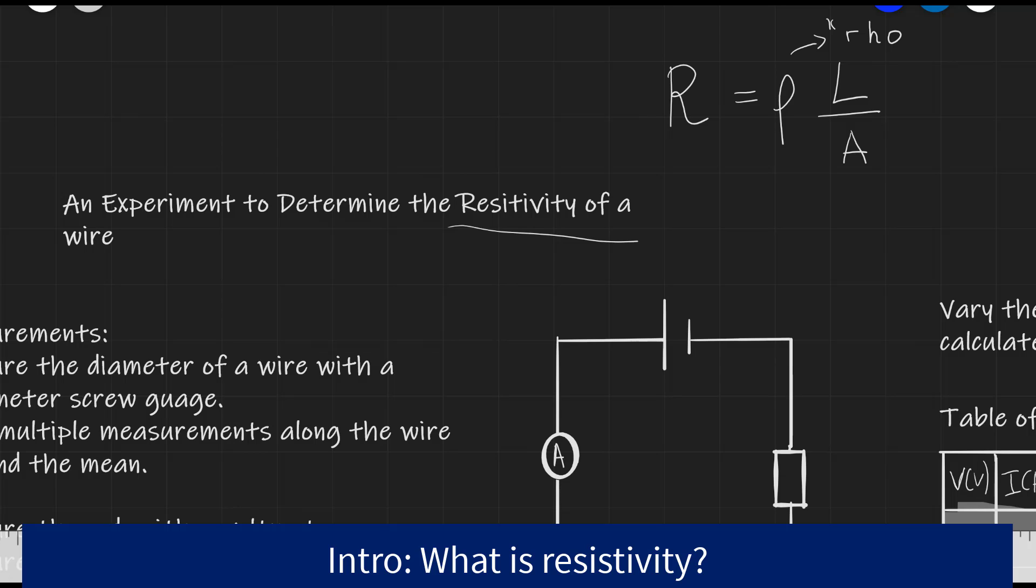In order to determine the resistivity, we need to be able to measure the resistance per given length of the wire. We'll also need to measure the cross-sectional area of the wire.